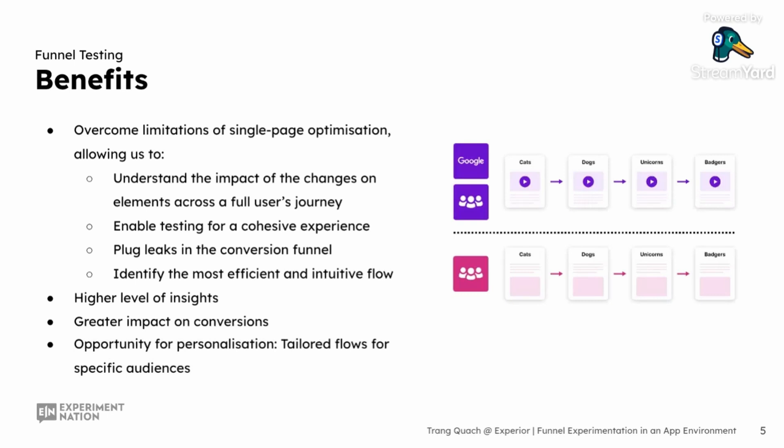Funnel testing also opens up opportunities for personalization. You can tailor your approach to different user segments, which can be implemented across the flow. For example, one flow for users coming from paid search and organic search, a different flow for users coming directly or via social media. This means you can create personalized experiences that better meet the needs and preferences of various groups, enhancing overall engagement and satisfaction.